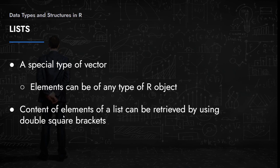Lists can even contain other lists, which makes them fundamentally different from atomic vectors. Lists are a special type of vector. Similar to matrices, we can access elements of lists using double square brackets — remember, for a matrix we used single square brackets, but with lists we need double square brackets. For example, to retrieve the third element in a list — whether it be another list, a vector, a matrix, or a single element — we would use double brackets containing the number 3.